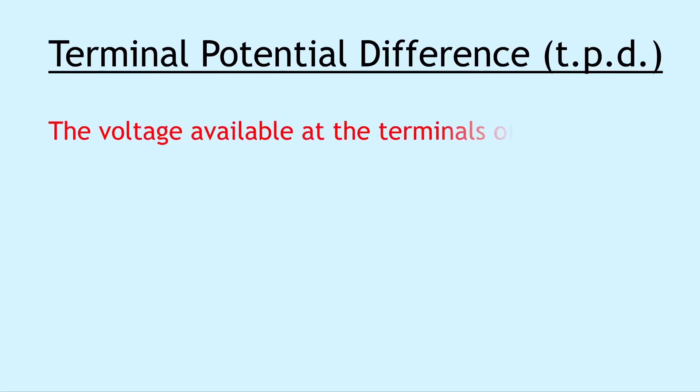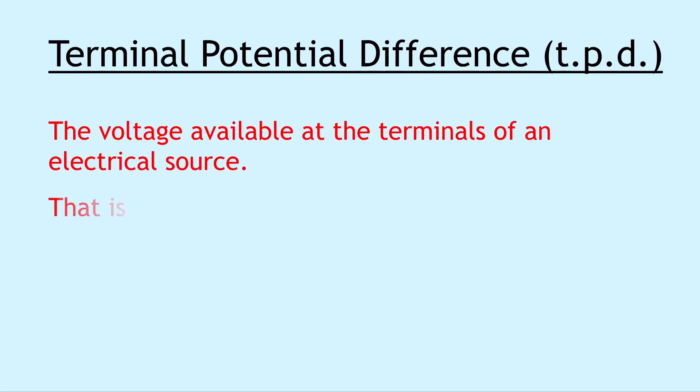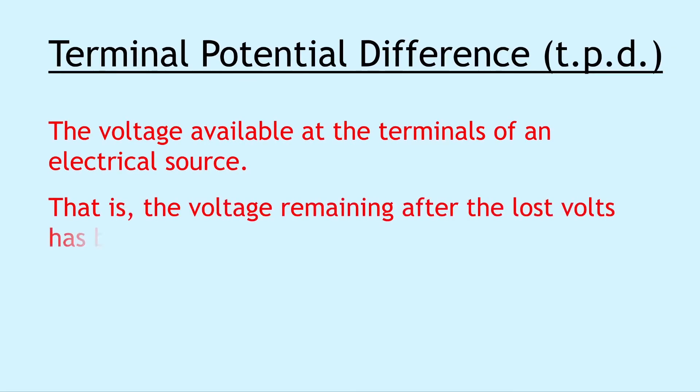Moving on we have terminal potential difference, which can be shortened to TPD. And this is the voltage available at the terminals of an electrical source — that is, it's the voltage remaining after the lost volts has been subtracted from the EMF.